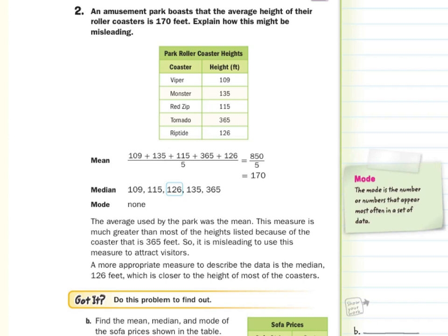The more appropriate measure to describe the data is the median, which is 126 feet, which is closer to the height of most coasters. Notice, did they lie when they said their average height was 170 feet? No, it is, that's the mean. However, it is misleading because of this one value.